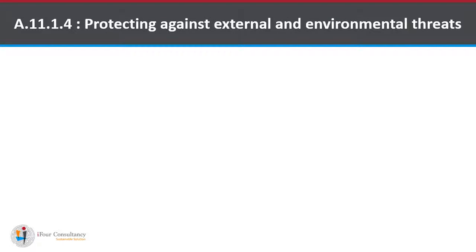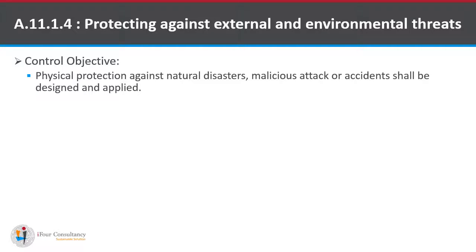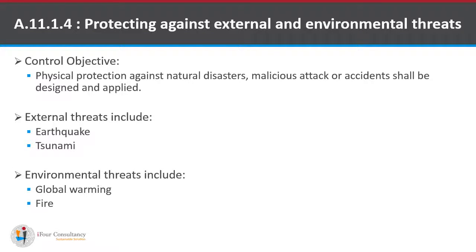The fourth sub-control is A.11.1.4, Protecting Against External and Environmental Threats. The control objective is that physical protection against natural disasters, malicious attacks, or accidents shall be designed and applied. External threats include natural disasters like Earthquake and Tsunami. Environmental threats include Global Warming and Fire. This sub-control takes care of protection against these natural disasters and environmental threats.